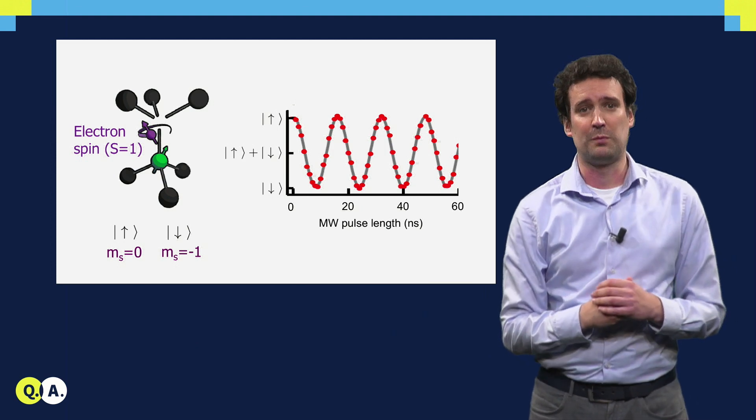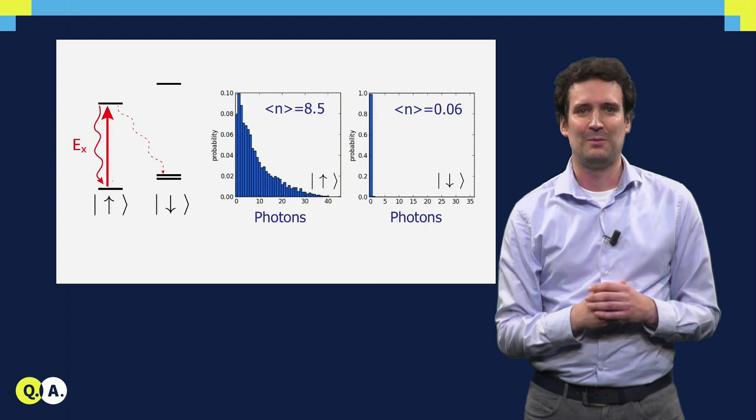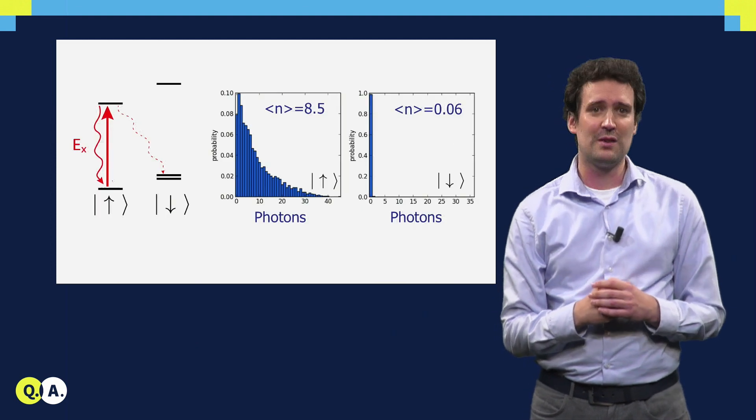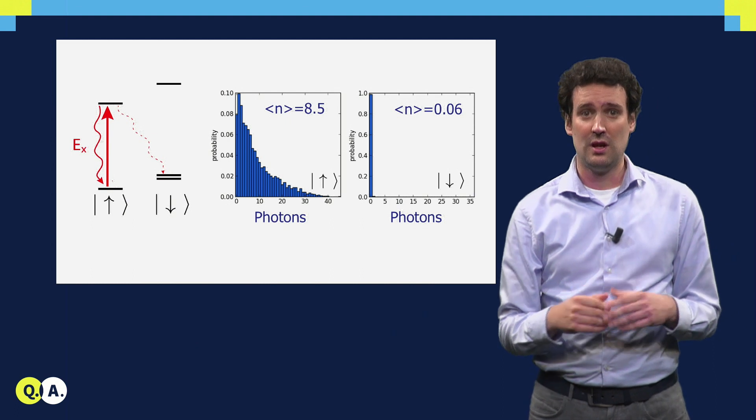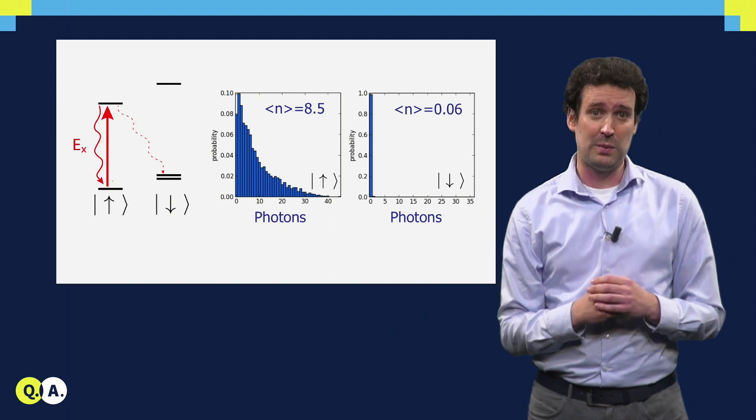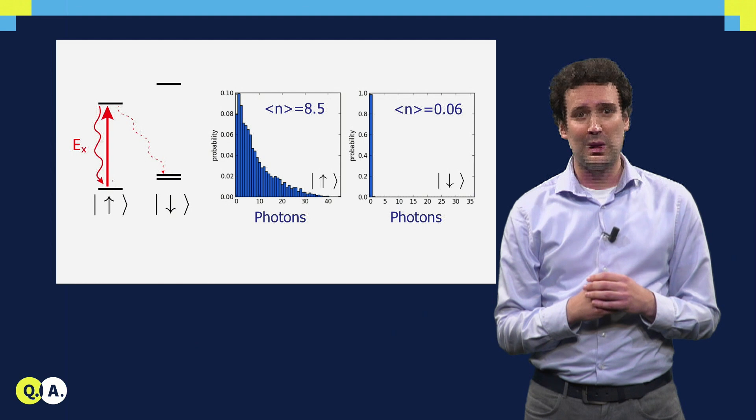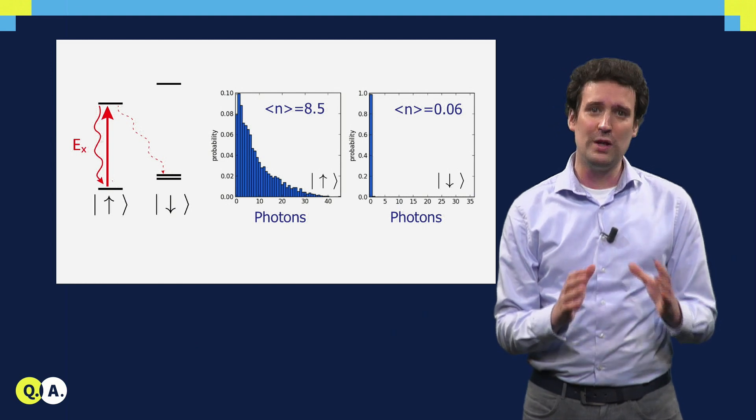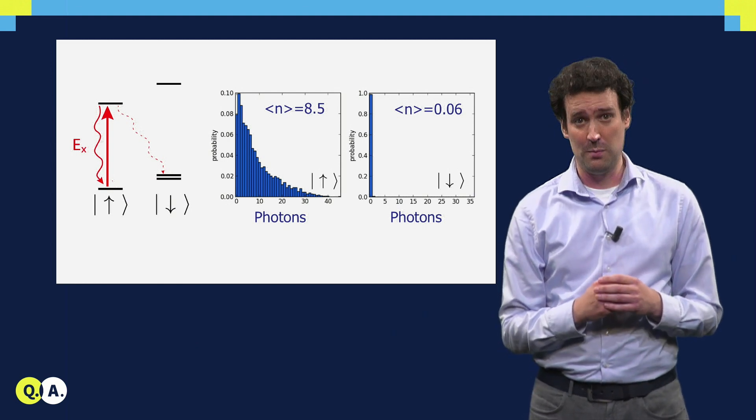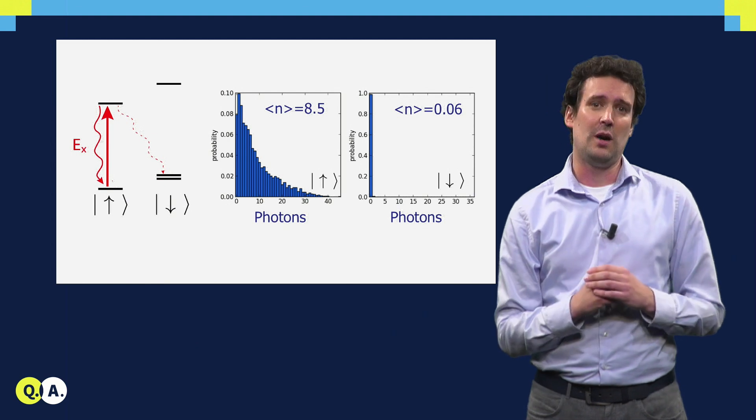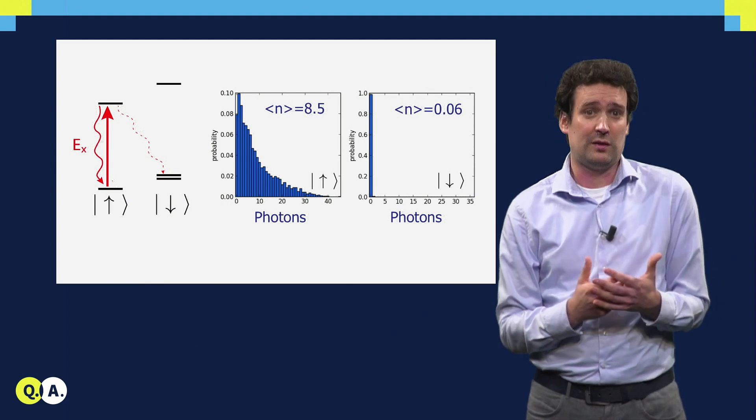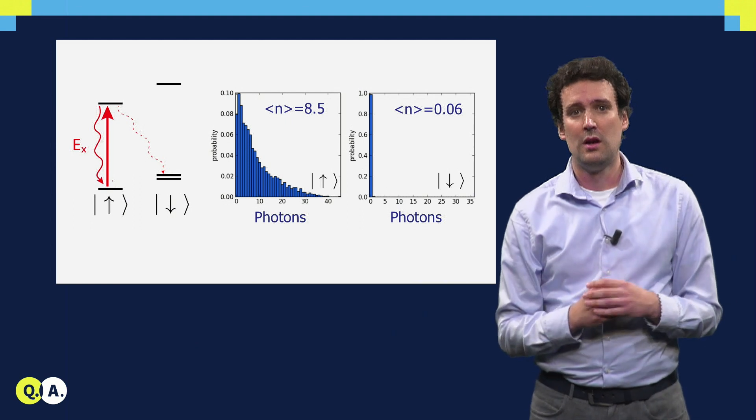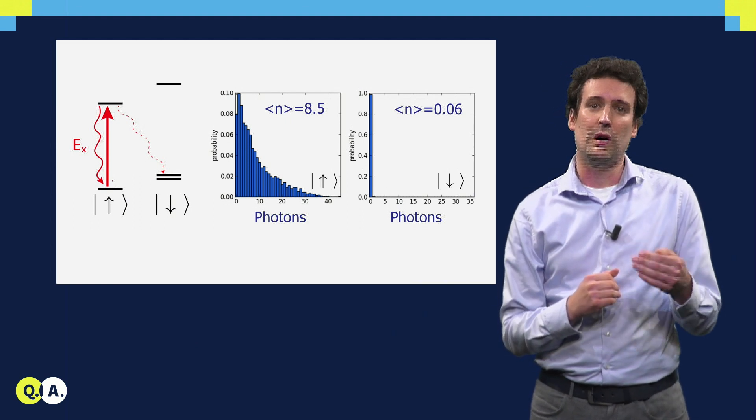How can we measure what the state of the spin is? For that, we use optics. The idea is really quite simple. There are different optical transitions in the NV center, which are associated to different spin states. So if we apply a laser pulse that is only resonant with the transition for spin up, then only when the spin is up, we excite the NV center and we detect photons. If the spin is down, it stays dark. So in this way, we can read out what the spin state is.